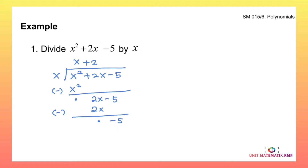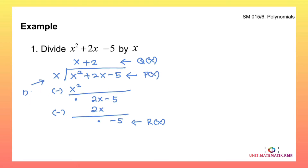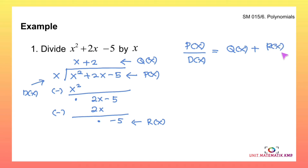From the long division we can identify: the quotient q(x), the remainder r(x), the polynomial p(x), and the divisor d(x). After performing long division, we write the result in general form: p(x) over d(x) equals q(x) plus r(x) over d(x).